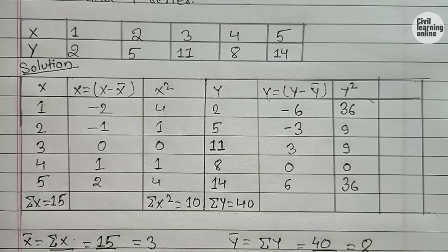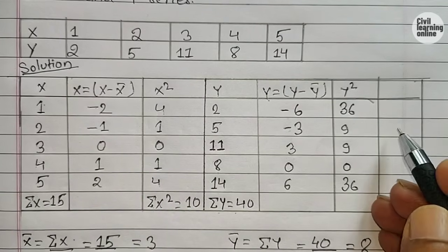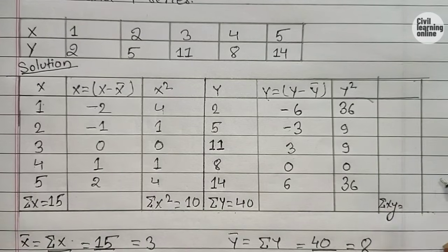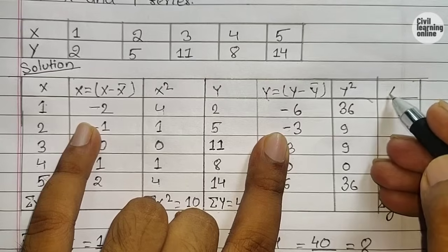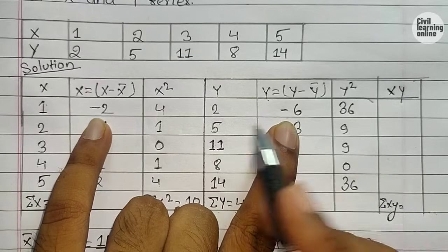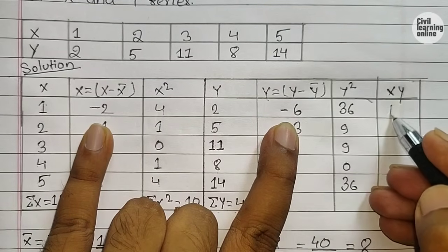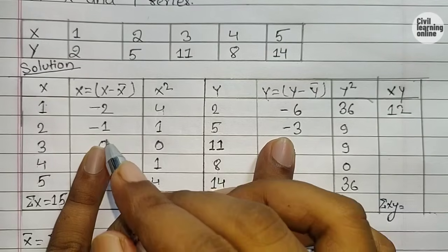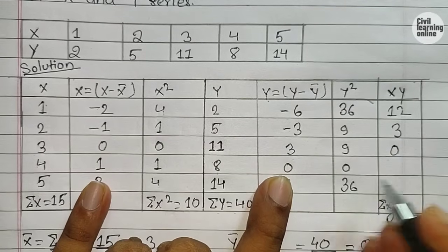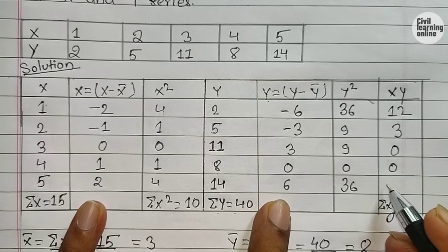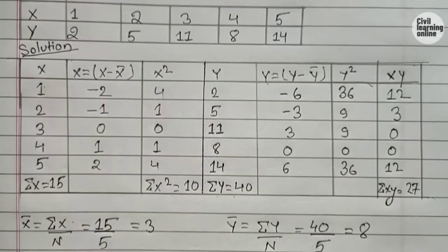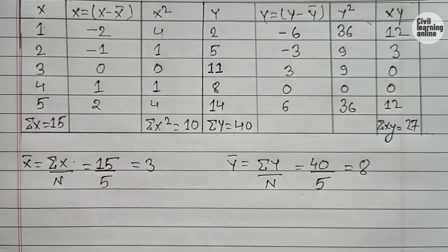After getting the new values of y, calculate y squared. As per the formula we also need the value of summation xy, so make a table for xy by multiplying the new values of x and y: minus 2 times minus 6 equals 12, minus 1 times minus 3 equals 3, 0 times 3 equals 0, 0 times 1 equals 0, and 2 times 6 equals 12. Adding these gives summation xy equals 27.